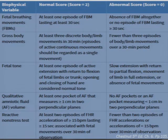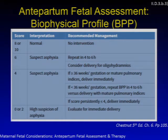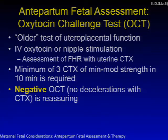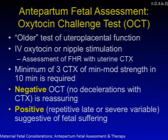BPP scores of 8 to 10 are normal; scores of 4 or below may necessitate imminent delivery. The oxytocin challenge test is an older test of uteroplacental function — IV oxytocin or nipple stimulation is used to assess the fetal heart rate during uterine contractions. A minimum of 3 contractions of minimal to moderate strength in 10 minutes is required for a complete test. A negative OCT — no decelerations with contractions — is reassuring. A positive OCT — repetitive late or severe variable decelerations — suggests fetal compromise and is associated with adverse perinatal outcome in 35 to 40% of patients.